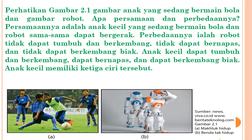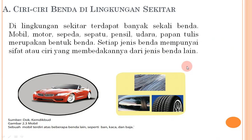Kita lihat gambar anak yang sedang bermain bola dan gambar robot. Apa persamaan dan perbedaannya? Persamaannya, anak kecil dan robot sama-sama dapat bergerak. Perbedaannya, robot tidak dapat tumbuh dan berkembang, tidak dapat bernapas, dan tidak dapat berkembang biak. Anak kecil dapat tumbuh dan berkembang, dapat bernapas, dan dapat berkembang biak. Ciri tersebut merupakan ciri dari makhluk hidup.